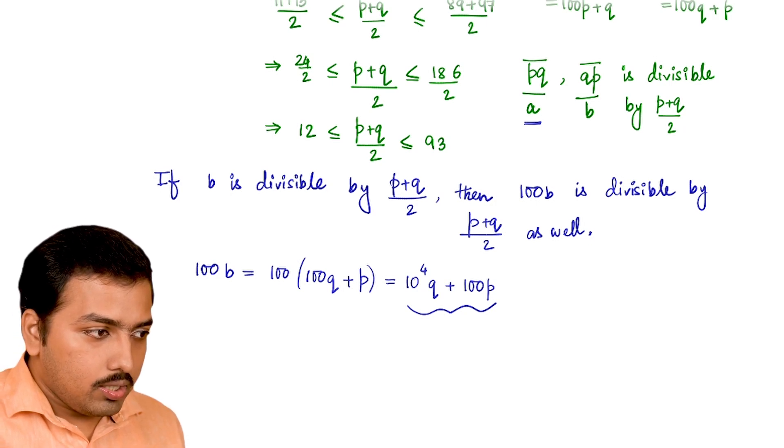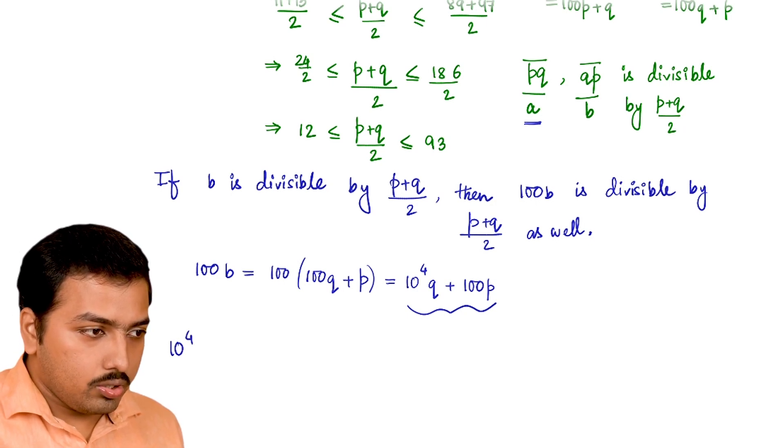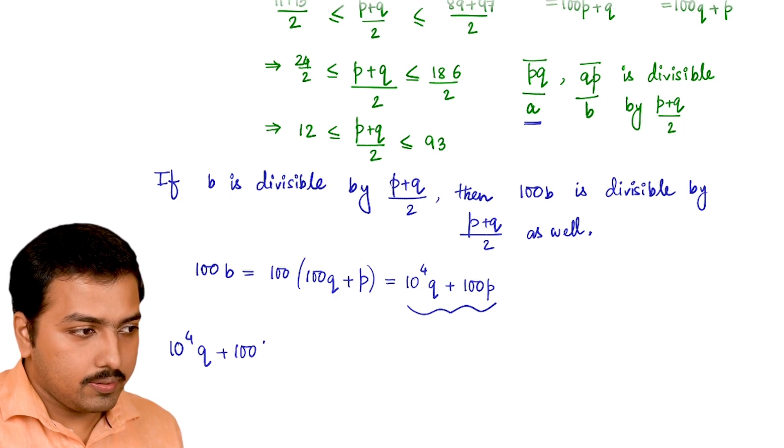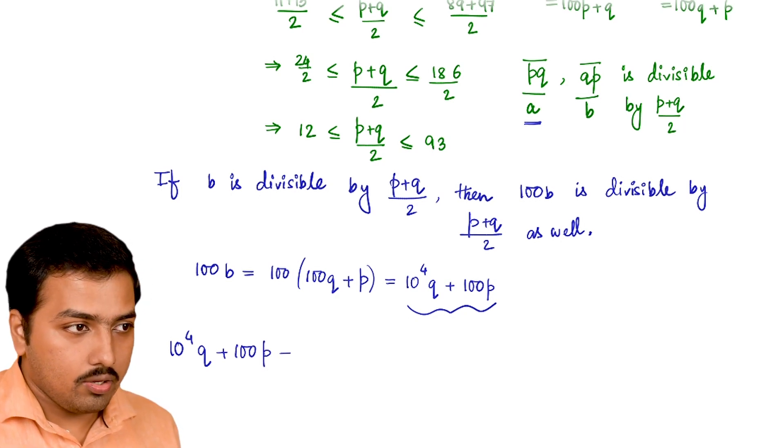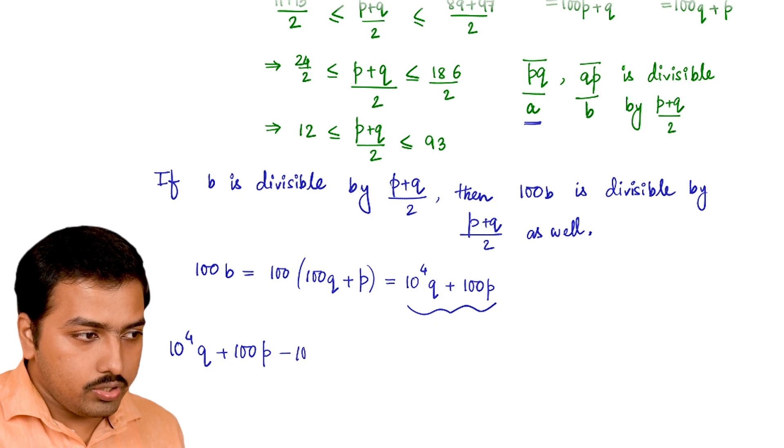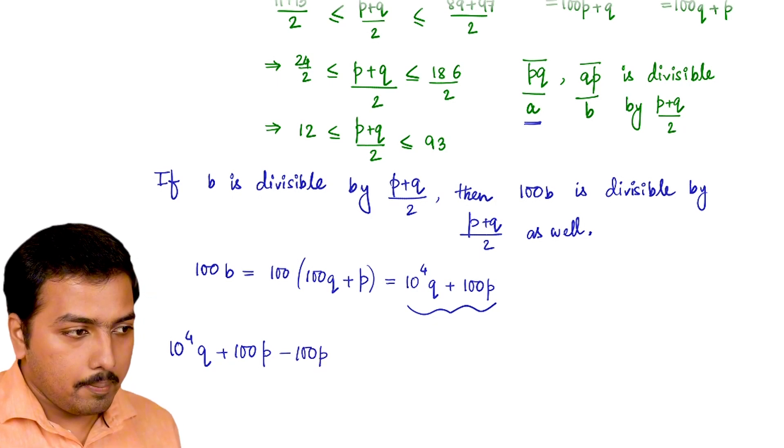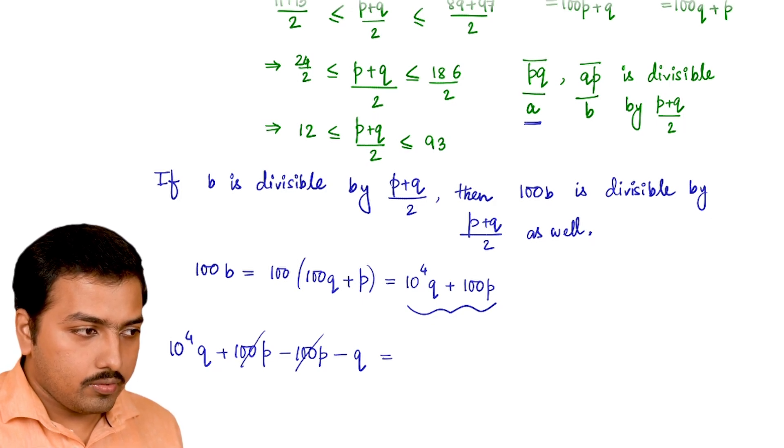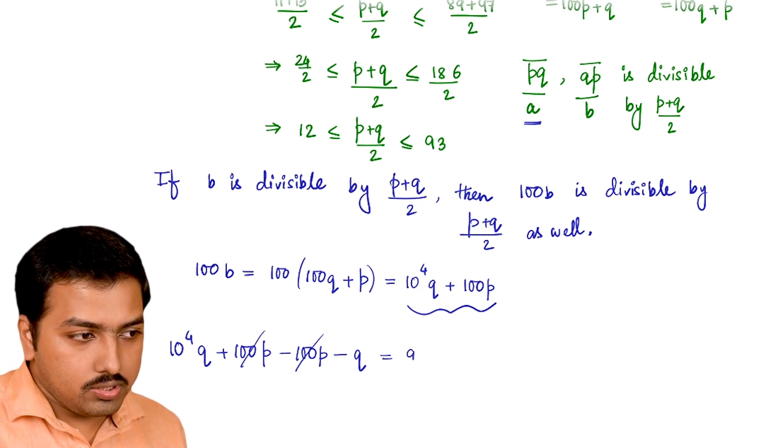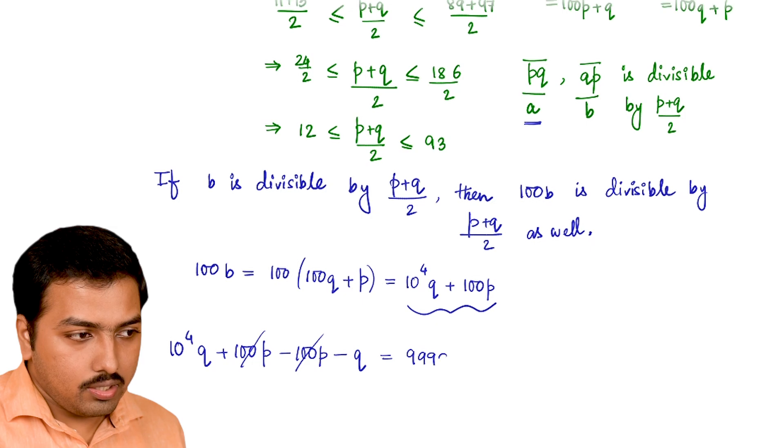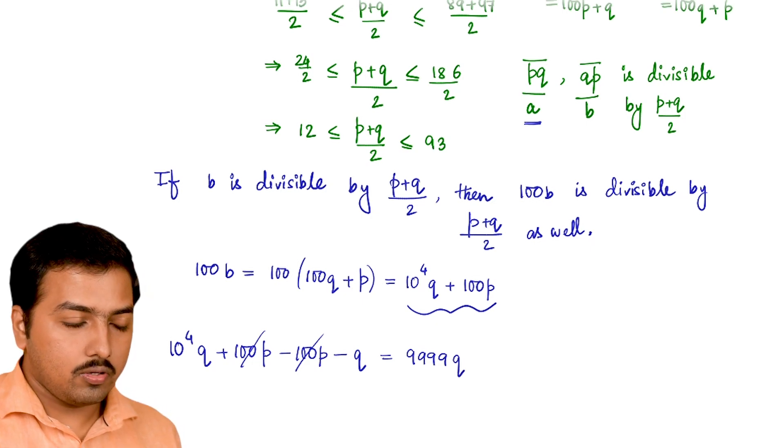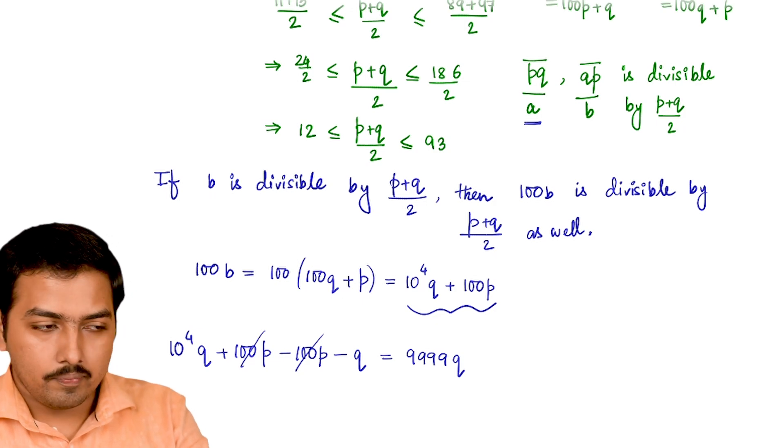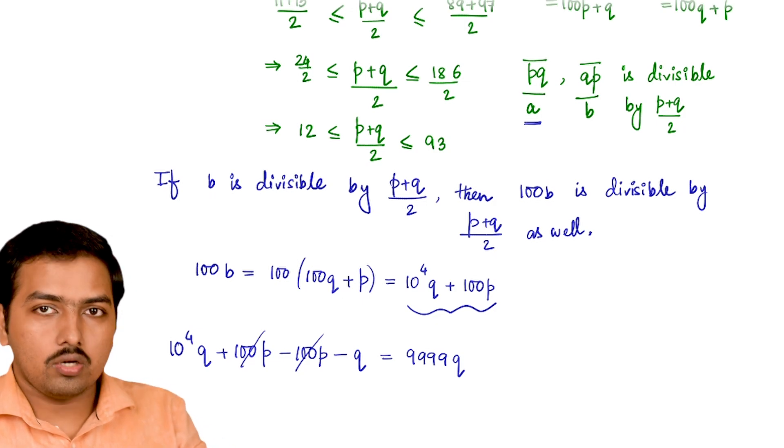So 10⁴q + 100p minus b, which was 100p + q. So we are getting this is going to be cancelled out. So this is 9999q. In one case, we are successful till now in reducing one unknown.